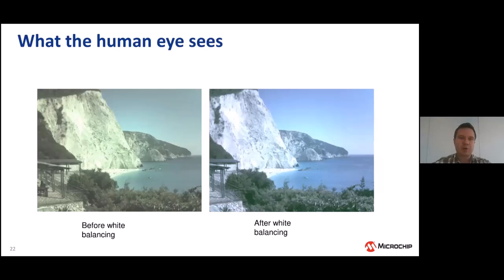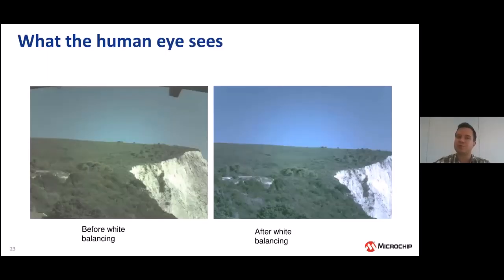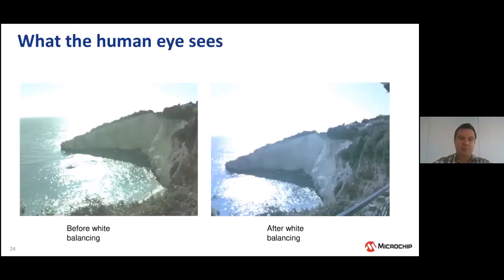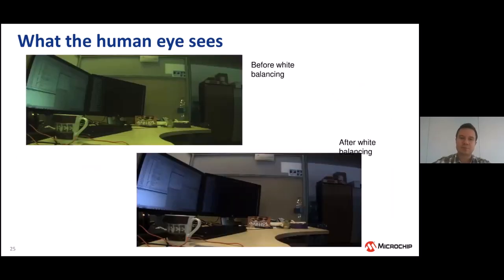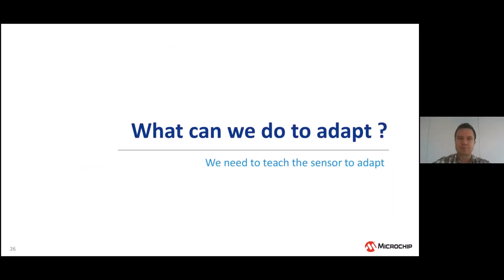The process of teaching the sensor to adapt is called white balancing. I will show you pictures side by side to see the differences before and after white balancing. More examples show how the photo is adapted to specific coloring for specific indoor and outdoor light. As I said, we need to teach the sensor to adapt to specific coloring, and we will see how in the following slides.